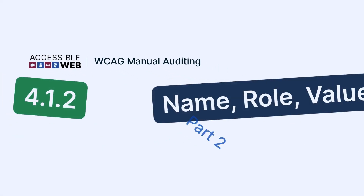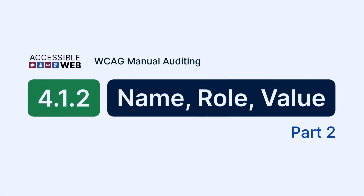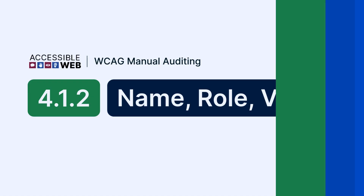Accessible Web. WCAG Manual Auditing. Part 2 of Testing Success Criterion 4.1.2 Name Role Value. In this part, we'll cover custom widgets, ARIA implementation, and W3C design pattern considerations. Let's get into it.